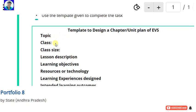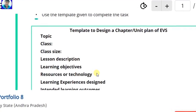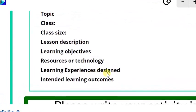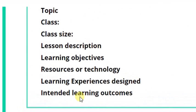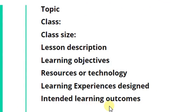First, select the topic, the class, and the class size — the number of students in a class. Then write the lesson description with key concepts and key points. Include learning objectives, resources or technology, learning experiences and design, and intended learning outcomes. Both learning outcomes and learning objectives are to be written, along with resources and learning experiences — meaning learning strategies for the teaching-learning process.